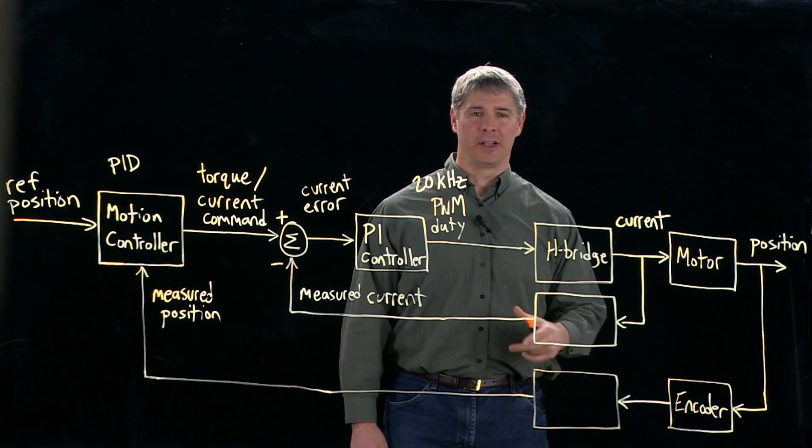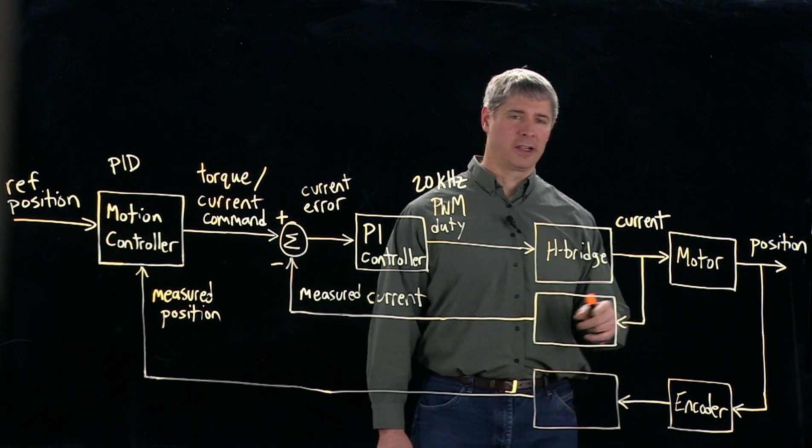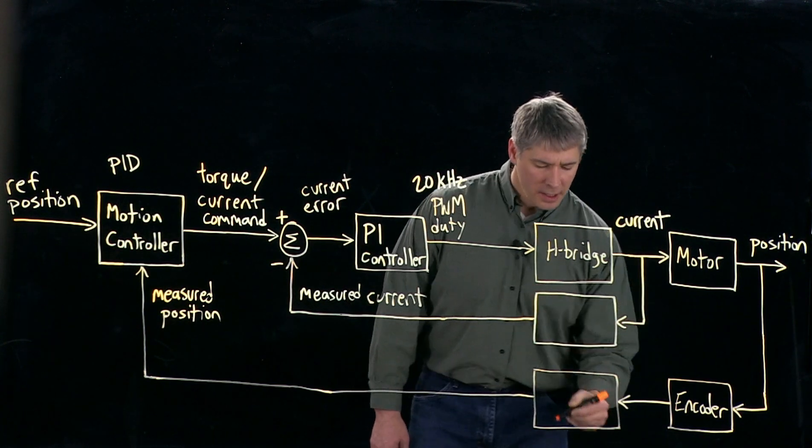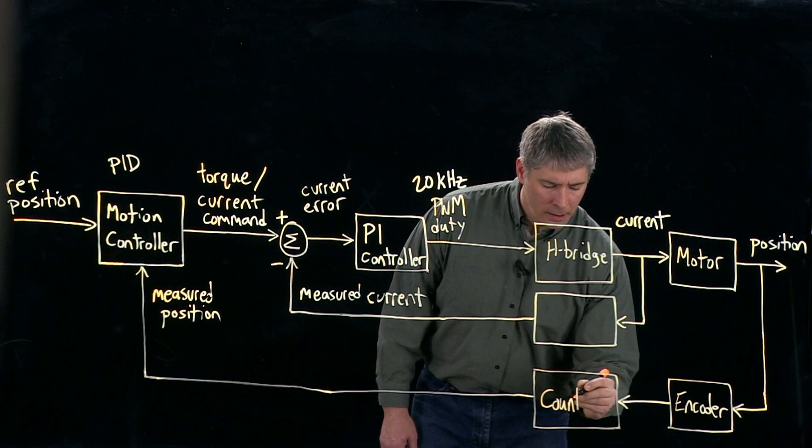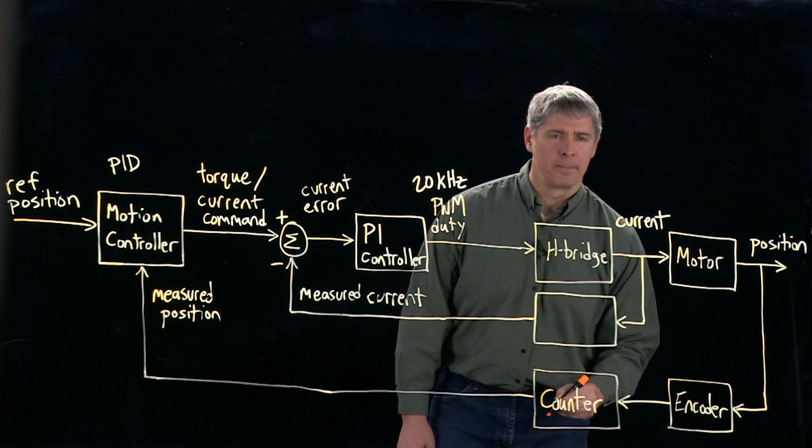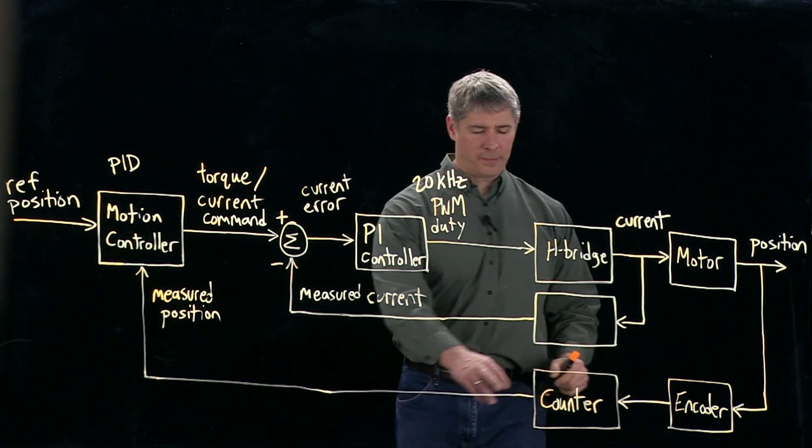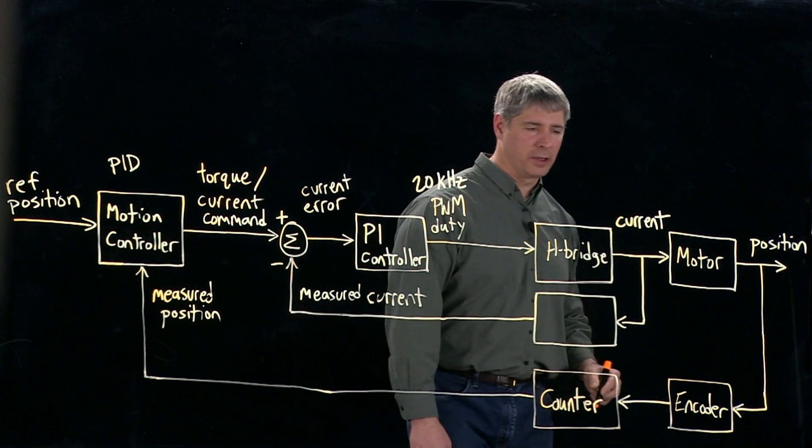Those pulses need to be counted so we know how far the motor is rotated clockwise or counterclockwise. So this is a counter. And then from that counter comes the measured position to our motion controller.